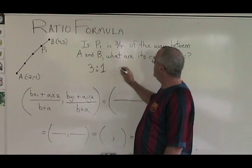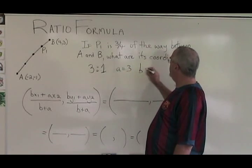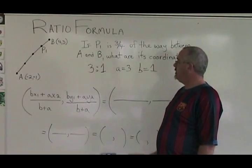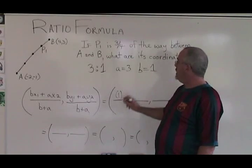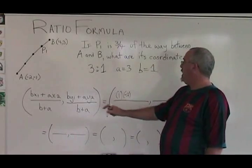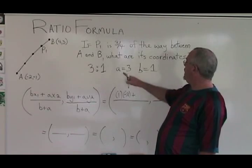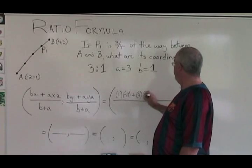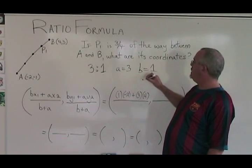A three to one ratio means our little a in our formula is equal to three, and our little b in the formula is equal to one. Now it's time to fill in the formula, which looks like this. Bx1 means one times negative two, the x coordinate of my starting point, plus Ax2 becomes plus A, which is three, x2, which is four, over B plus A. B plus A is one plus three.